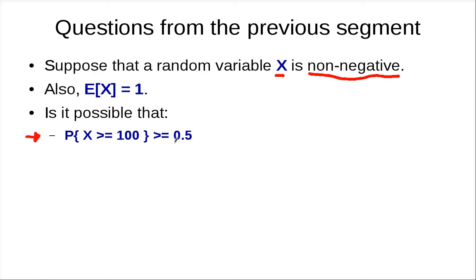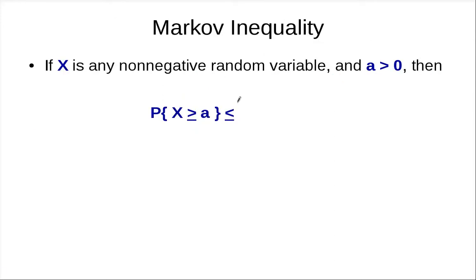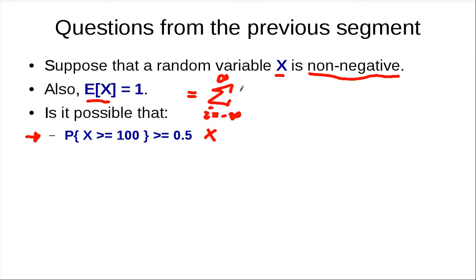I hope your answer is that this is not possible. What is the reason for that? We can look at the definition of expected value of X — it's equal to the sum over all possible values of X, where each value i is multiplied by the probability that X equals i. And since X is non-negative, this sum goes from 0 to infinity.